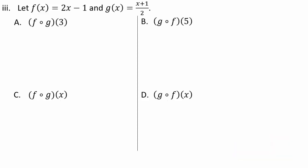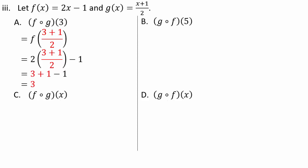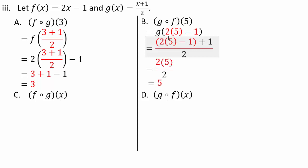Apply g first to 3: that gives (3 plus 1) over 2. Then that result goes into f: 2 times that minus 1. Simplifying, you get 3. For g composite f of 5: 5 goes into f first, giving 2 times 5 minus 1. That result enters g: result plus 1, all over 2. Simplifying gives 5. For f composite g of x and g composite f of x, the same process with x instead of 3 or 5 — both simplify to x.